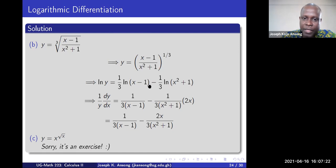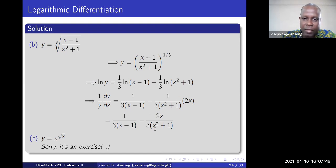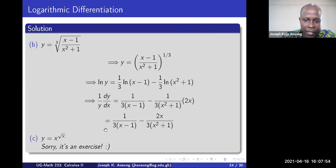So you have (1/3)·ln(numerator) minus (1/3)·ln(denominator). Once again, this form is much easier to differentiate. Differentiating: (1/y)·(dy/dx) equals 1 over the numerator times its derivative (which is 1), minus 2x over 3 times (x²+1) — using the chain rule on the denominator term.